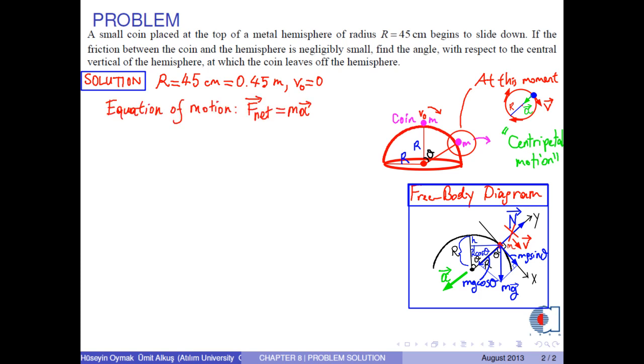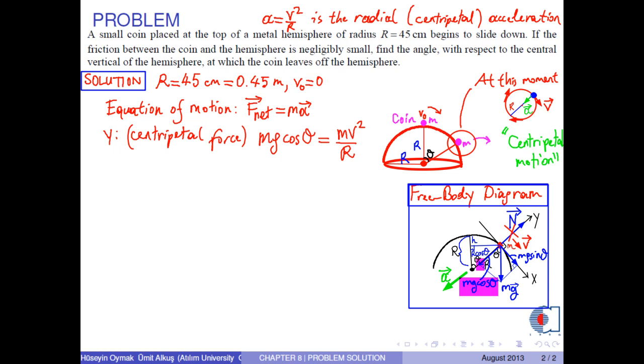If we write the equation of motion along the Y axis by the help of Newton's second law, the only force along this line is the centripetal force with magnitude M times G times cosine theta, which is equal to M times V squared over R by the help of Newton's second law. That's enough for the free body diagram of the object and the equation of motion.